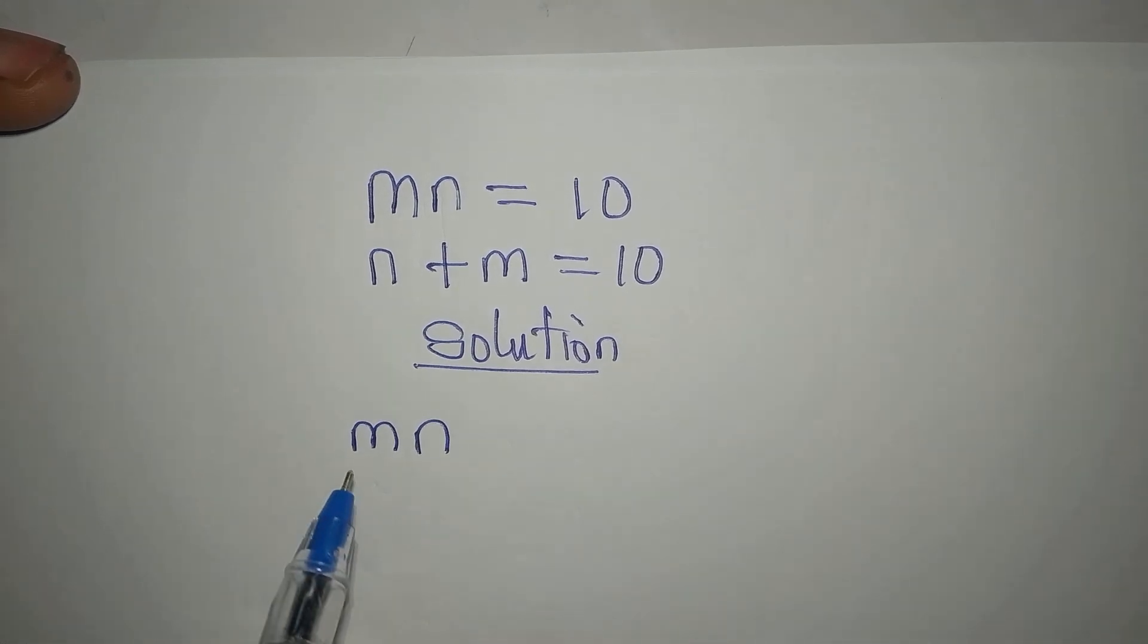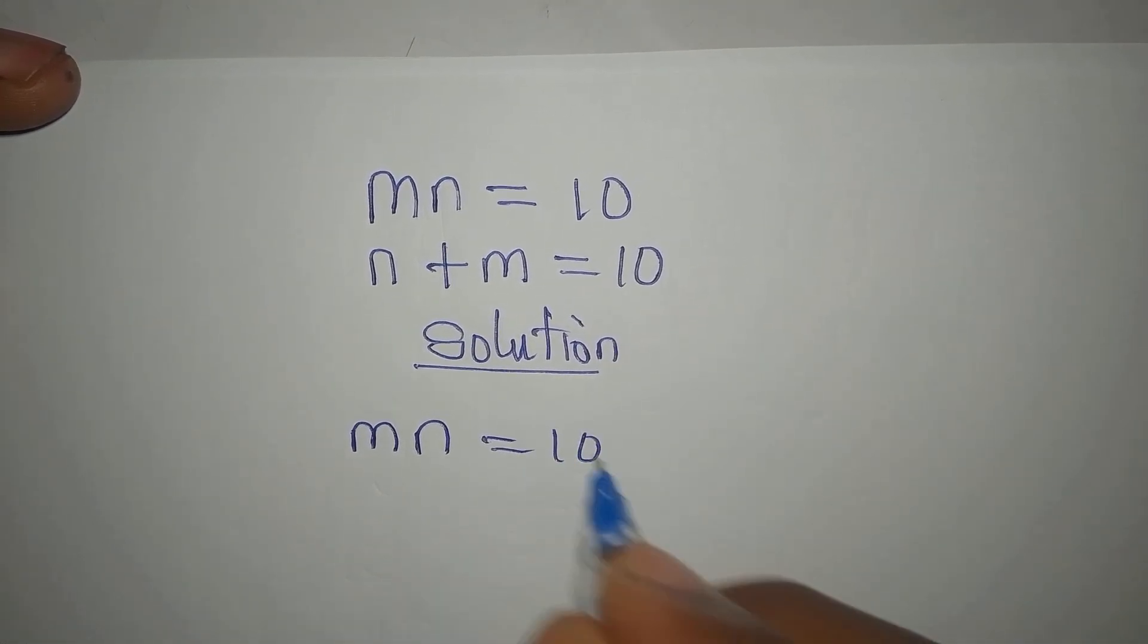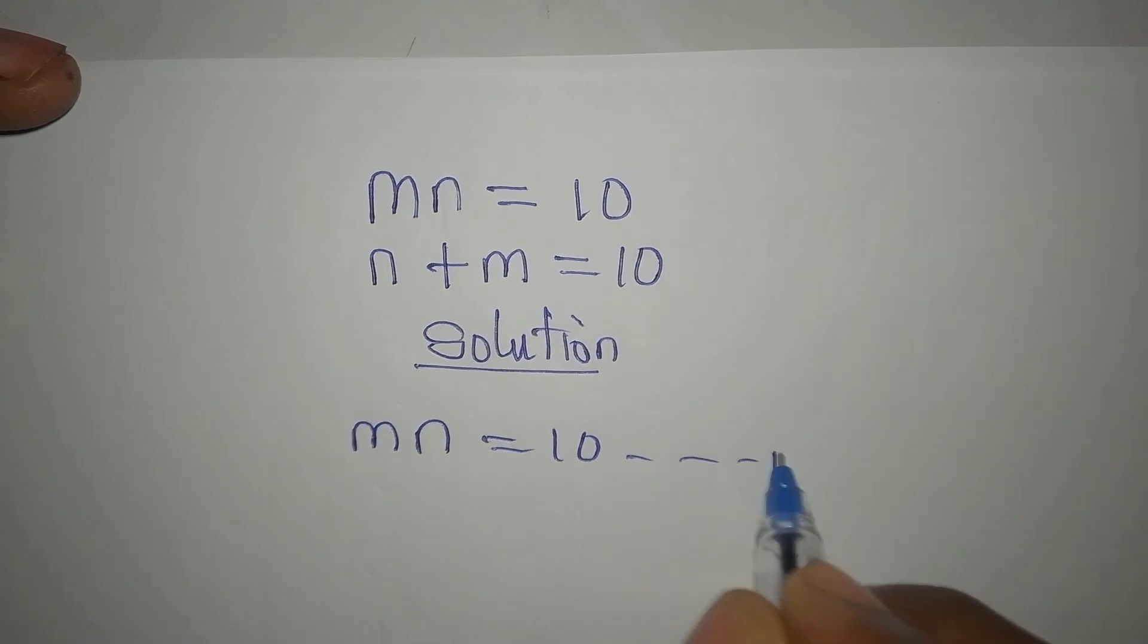Mn, that is m times n, equals 10. This is the first equation, equation 1.